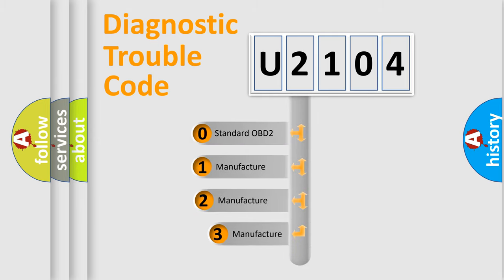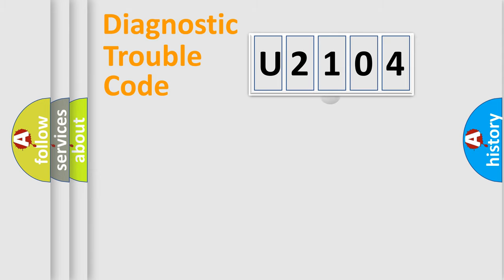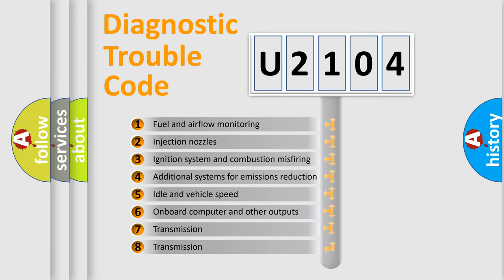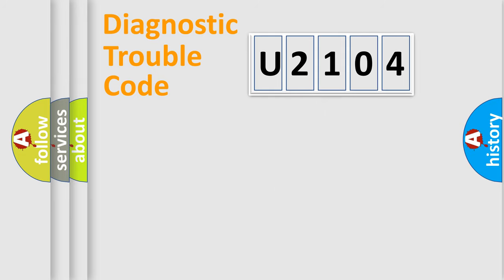If the second character is expressed as zero, it is a standardized error. In the case of numbers 1, 2, or 3, it is a more manufacturer-specific expression of the car-specific error. The third character specifies a subset of errors.